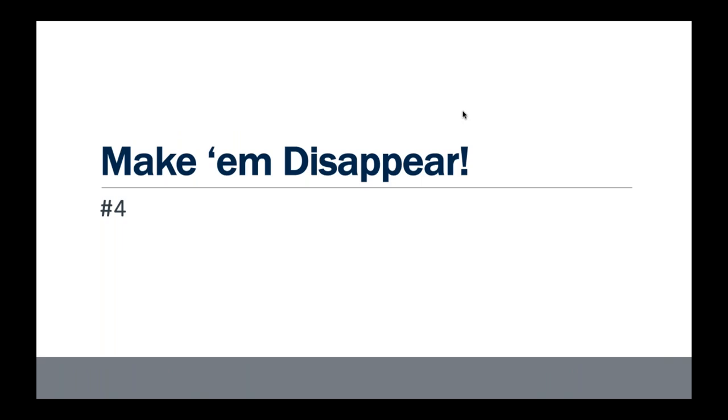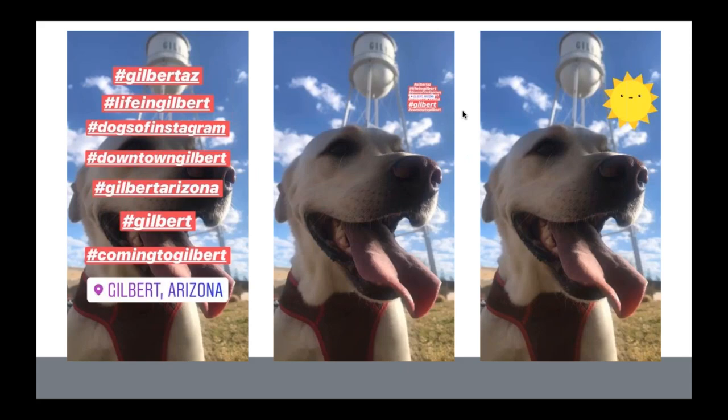If including location stickers, hashtags, and mentions makes your story too busy, here's a hack: shrink them down with two fingers, then place a GIF sticker on top to hide them. You still get all the benefits of those tags without the clutter. Alternatively, you can shrink the text all the way down until it disappears completely.